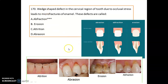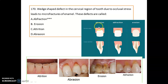Let's look at the different kinds of regressive alterations of teeth: attrition, abrasion, erosion, and abfraction. Don't confuse abrasion and abfraction. A wedge-shaped defect in the cervical region of a tooth due to occlusal stress leading to micro-fracture of enamel — that defect is known as abfraction.